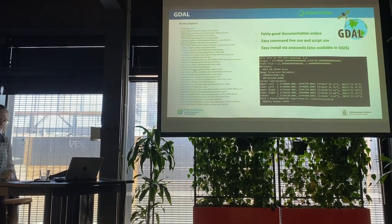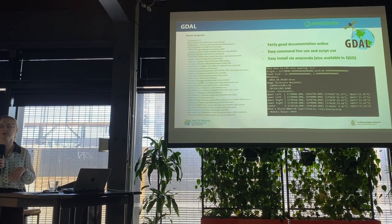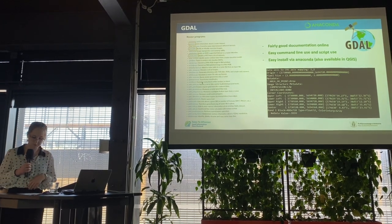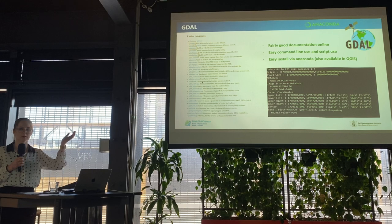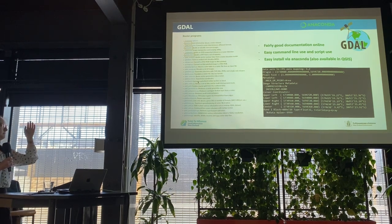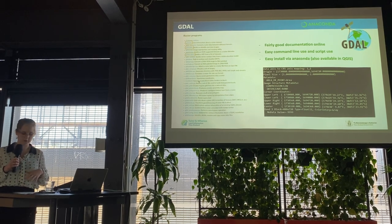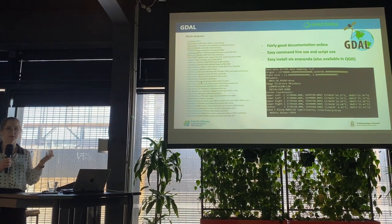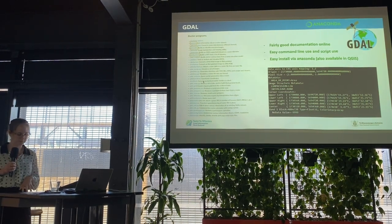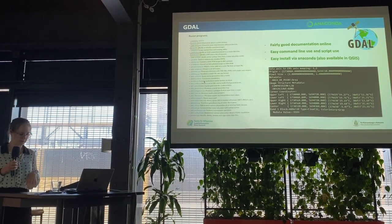GDAL, which most of you have heard of before, is specifically for raster and vector formats. We use it for the DEM and DSM QC process, installed through Anaconda and accessed through command lines and scripts. It has good documentation online. It also has a lasinfo equivalent called gdalinfo, which reads the tag information of a raster file and prints it to terminal. We use this in a script to go through all tiles and check whether the information is correct. Common issues include incorrect tiling, incorrect no-data values, and wrong georeferencing.